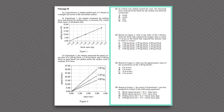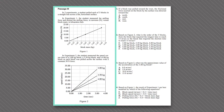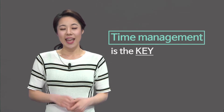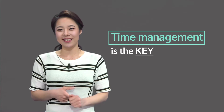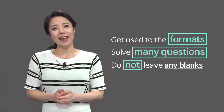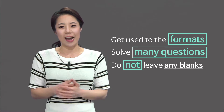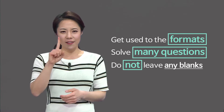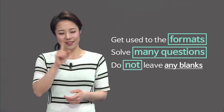Read the questions first and then come back to the information given, since questions tell you where to look. Taking ACT science at the very end of the test can be exhausting — that's one reason students find it hard. Time management is key. Get used to the format, solve as many questions as possible, and do not leave any blanks.